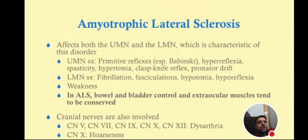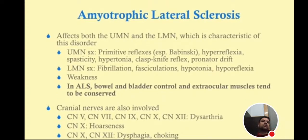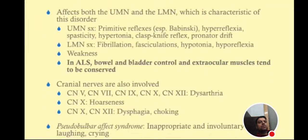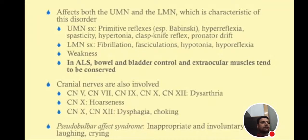ALS affects both upper and lower motor neurons. Upper motor neuron symptoms include primitive reflexes — especially Babinski — hyperreflexia, spasticity, hypertonia, clasp-knife reflex, and pronator drift. Individual videos will be made on Babinski reflexes, pronator drift, and hyperreflexia.